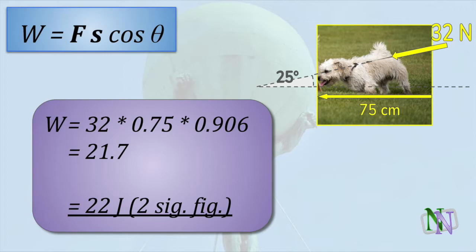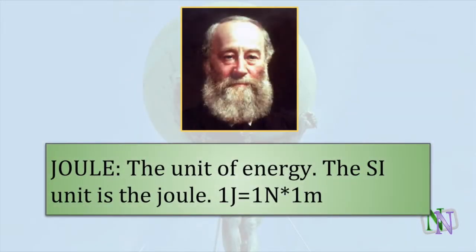We substitute into the formula, noticing that the displacement must be converted to meters from centimeters. The cosine is stated as three significant figures to be a bit more precise, though we know in the end that we must round to two significant figures. And here is the unit, the joule, named after James Joule, which applies to both work and energy. When a force of one newton moves an object one meter in the direction of the force, the work done is one joule.